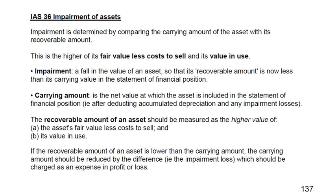My dear friends, this is ARD your accounting coach and the topic of the day is IAS 36, impairment of assets. Impairment means a permanent reduction in the value of non-current assets, or it can be in current assets as well, but we'll be discussing here the effect on non-current assets.